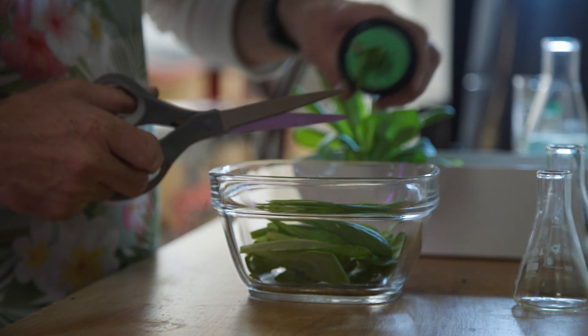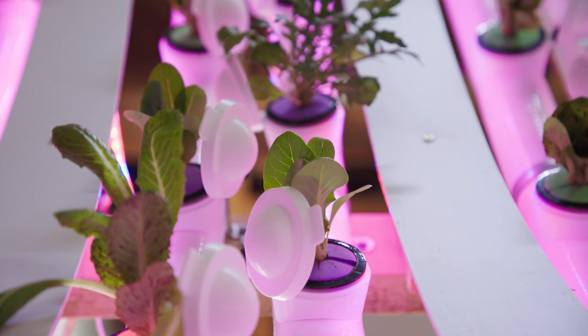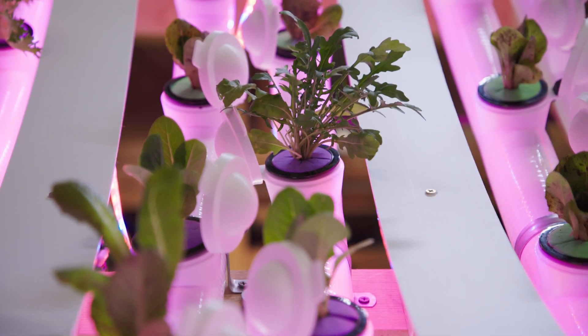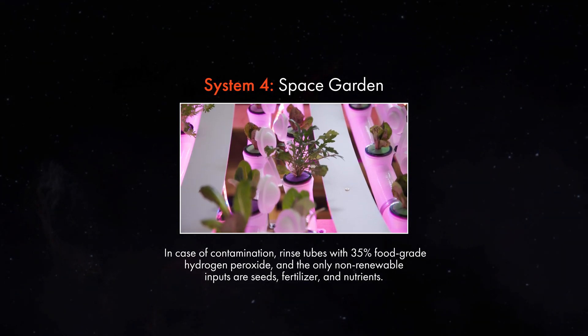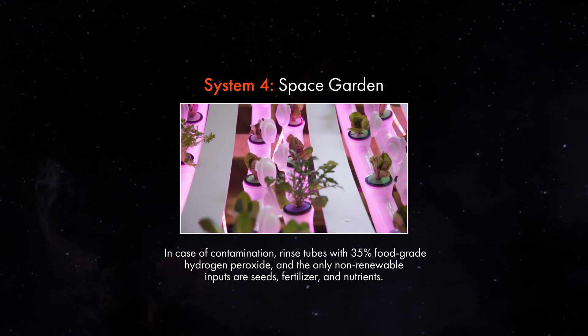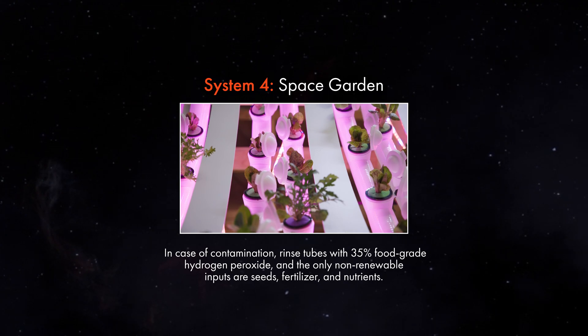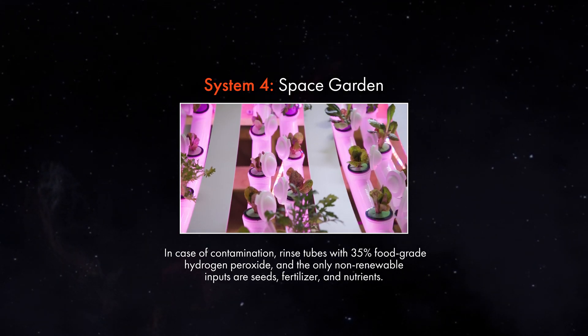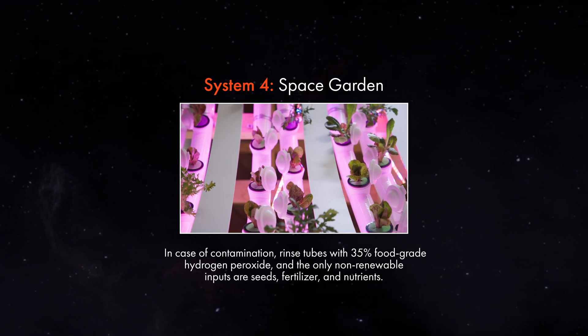The remaining roots are then removed and the rock wool is microwaved for 20 seconds to sterilize for the next planting. As seeds are harvested, capsules are cleaned and reseeded for the next growing cycle. In case of contamination, each tube can be rinsed with 35% food-grade hydrogen peroxide, then replenished with sterilized capsules. The only non-renewable inputs are seeds, fertilizer, and nutrients.